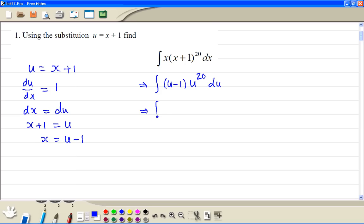Then we remove the bracket. So we get u to the power 21 minus u to the power 20 du. Now we integrate. Increase the power by 1 and divide. So 1 over 22, u to the power 22, minus add 1 and divide. So 1 divided by 21, u to the power 21, plus c.